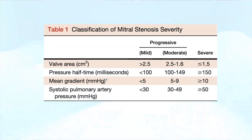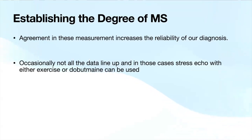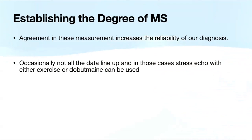The AHA guidelines for mitral stenosis severity classification: valve area less than 1.5 is severe, 1.6 to 2.5 is moderate, more than 2.5 is mild. Pressure half-time of 150 milliseconds or more is the cutoff for severe. Mean gradients—based on a heart rate of 60 to 80—less than 5 is mild, 5 to 9 is moderate, more than 10 is severe. Pulmonary artery pressure more than 50 is consistent with severe. We evaluate all four parameters together to increase reliability. Occasionally when data don't line up, we can use stress echo or dobutamine echo to drive transmitral gradients up.